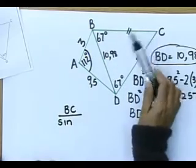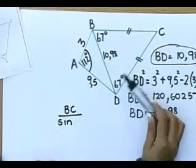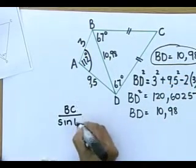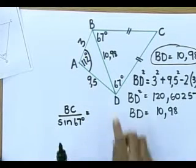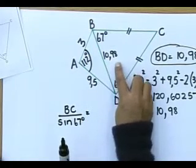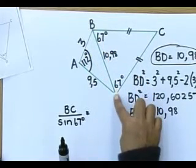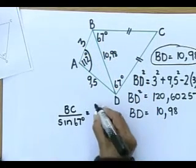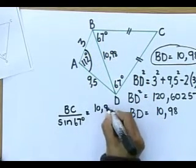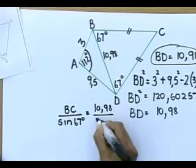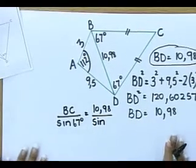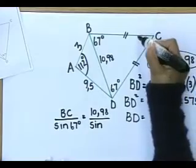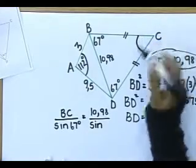What angle is opposite BC? That is BC. What angle is opposite it? 67 degrees is equal to... Now you're going to work with the 10.98, because that is the only side that you have.